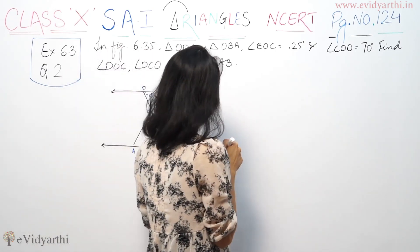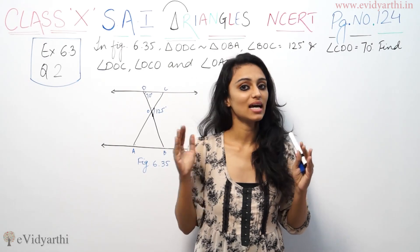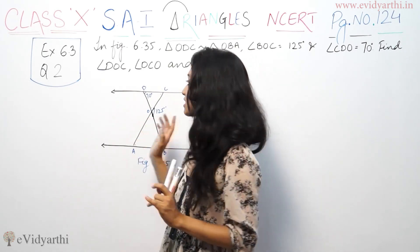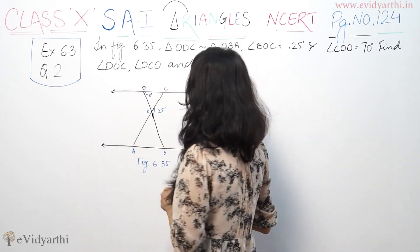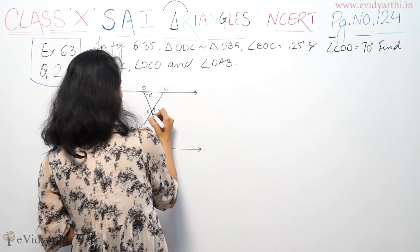The first thing is that the triangle is similar. That means all angles and all sides are proportional. So, here is the angle. This is 125.